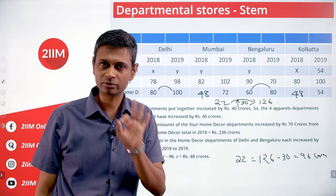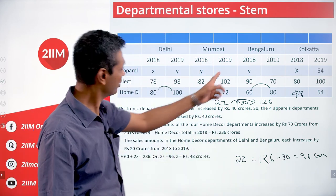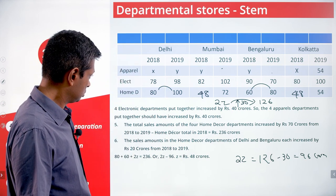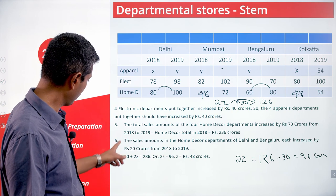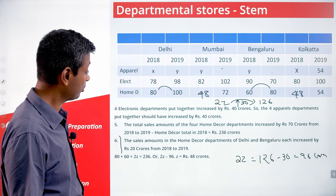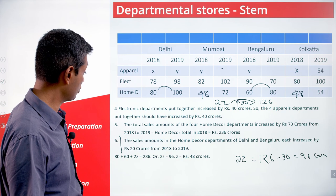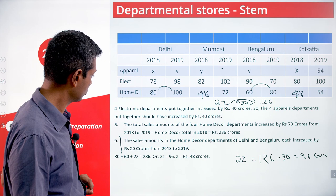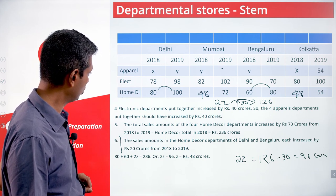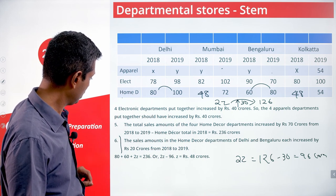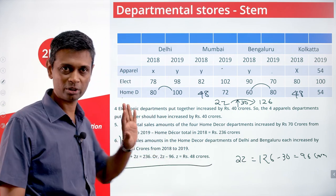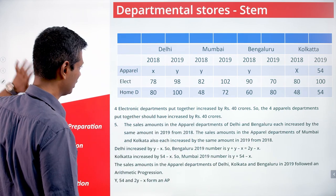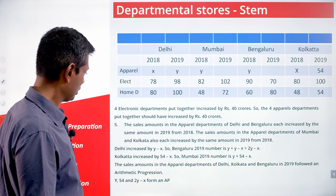Of our three variables we have already found one: z is 48. We still have some gaps — we'll get there. The sales amounts in the home decor departments of Delhi and Bengaluru each increased by 20 crores from 2018 to 2019. So z is confirmed as 48. Let's fill that in and go to the next part.